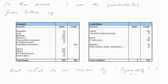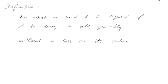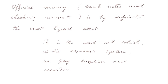But what do we mean by liquidity? An asset is said to be liquid if it is easy to sell quickly without a loss on its value. For example, official money — banknotes and checking accounts at the bank — is by definition the most liquid asset. It is the asset with which in the economic system we pay suppliers and creditors.